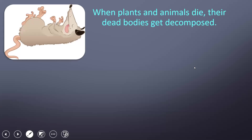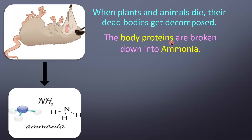Now, when your plants and animals die, their dead bodies get decomposed. Decomposition is when dead plants and animals — their organic matter — gets converted into inorganic matter, or in simpler terms, your complex body gets converted into simple nutrients. During decomposition, the body proteins are broken down into something called ammonia. Ammonia's structural formula is NH₃.